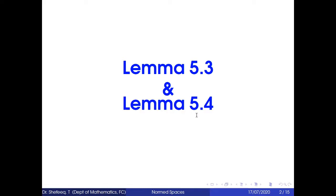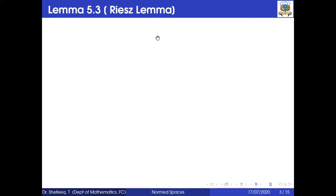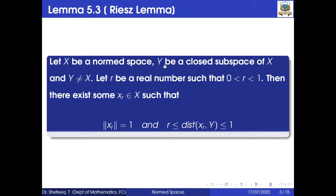Today we will discuss Lemma 5.3 and Lemma 5.4. Lemma 5.3 is known as Riesz's Lemma. Statement: let X be a normed space, Y be a closed subspace of X with Y not equal to X, and let r be a real number such that 0 < r < 1. Then there exists some x_r in X such that norm of x_r equals 1 and r ≤ dist(x_r, Y) ≤ 1.